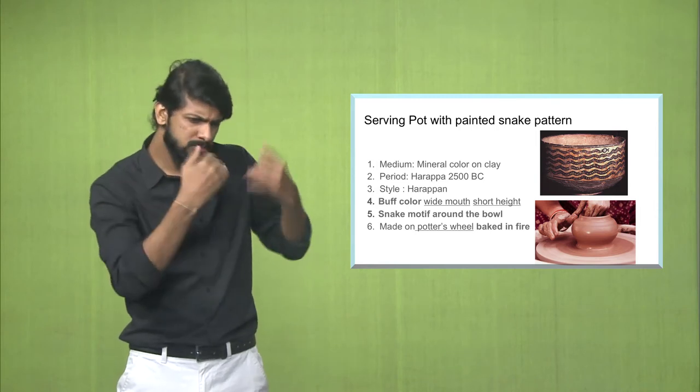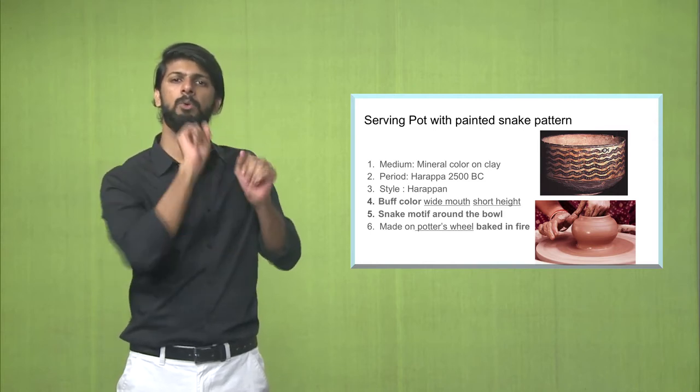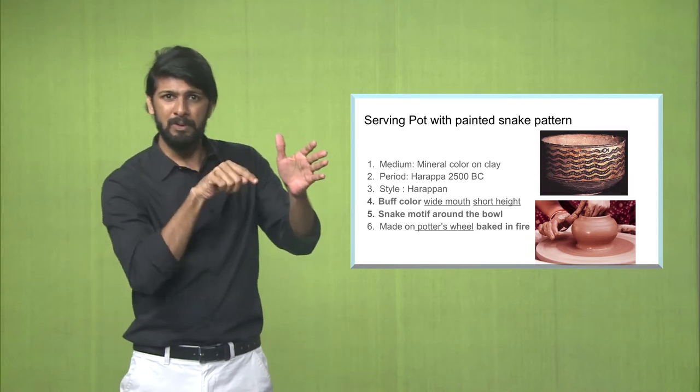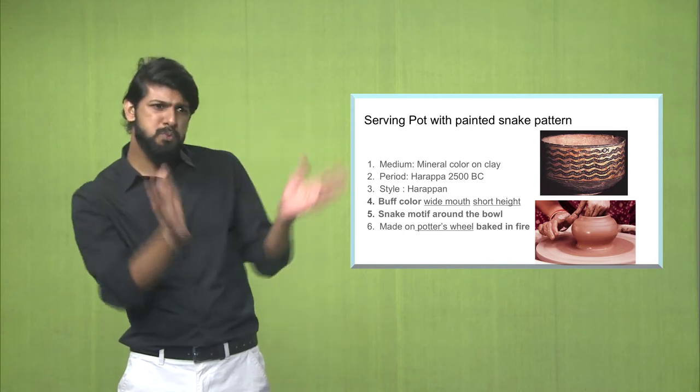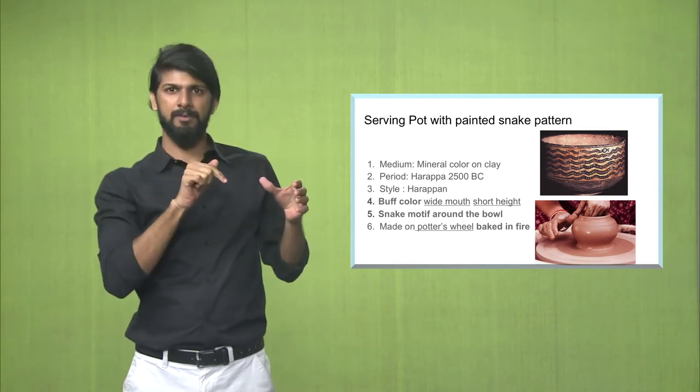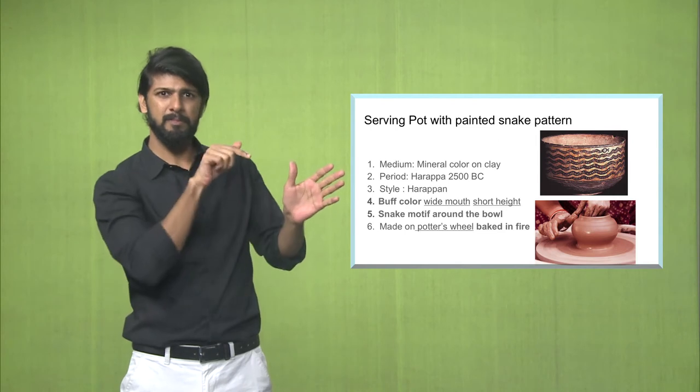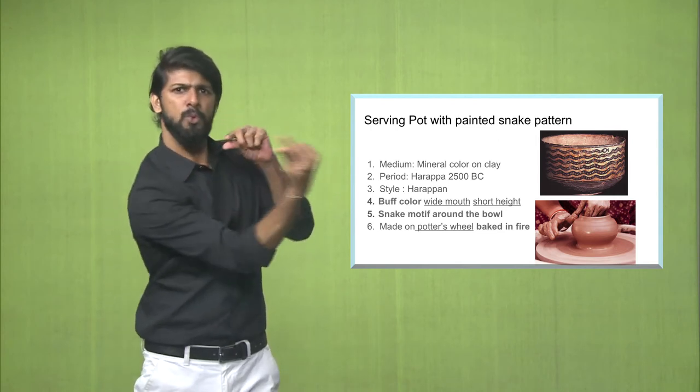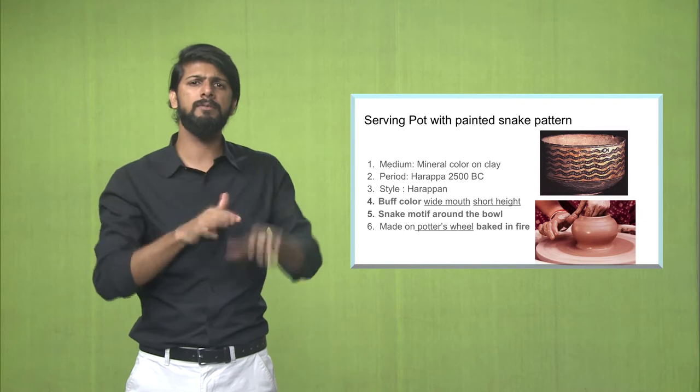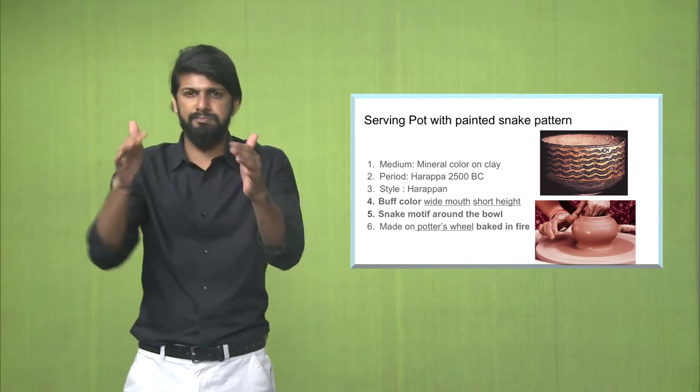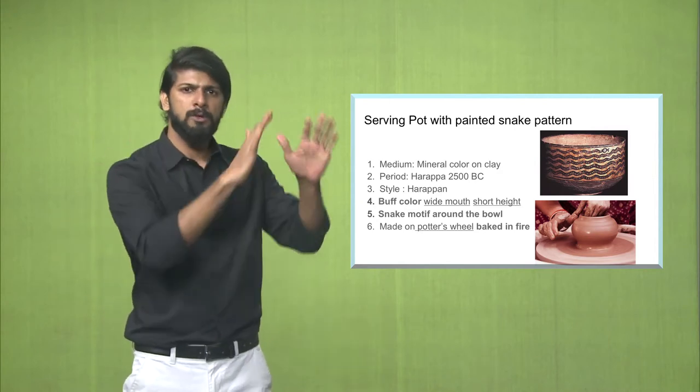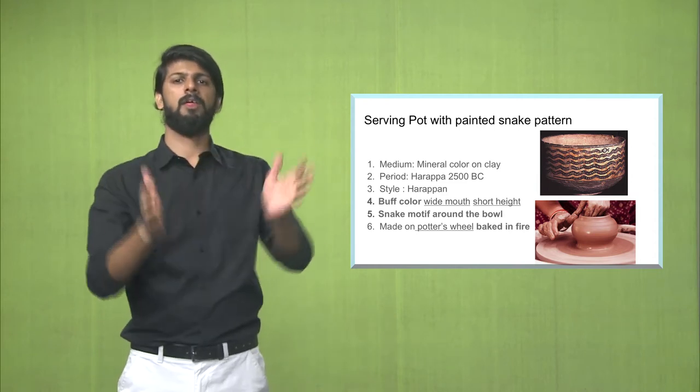The artists of the Indus Valley in Harappa, it was their style. This pot is buff colored, it has a wide mouth. The motif of a snake goes all around the serving pot, and it was made using a potter's wheel and later it was baked in the fire to make it sturdy.